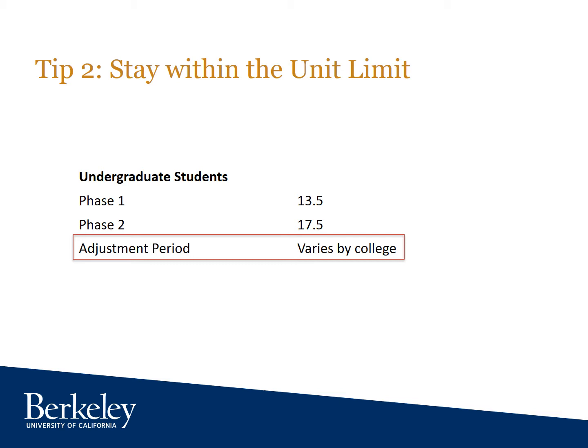The thing that trips most people up is that students forget that waitlisted classes count towards these upper unit limits. So I get a lot of questions in the fall with students saying they can't enroll in a class — and the reason often can be that you have a waitlisted class you've forgotten about that's using some of the units for that particular phase.